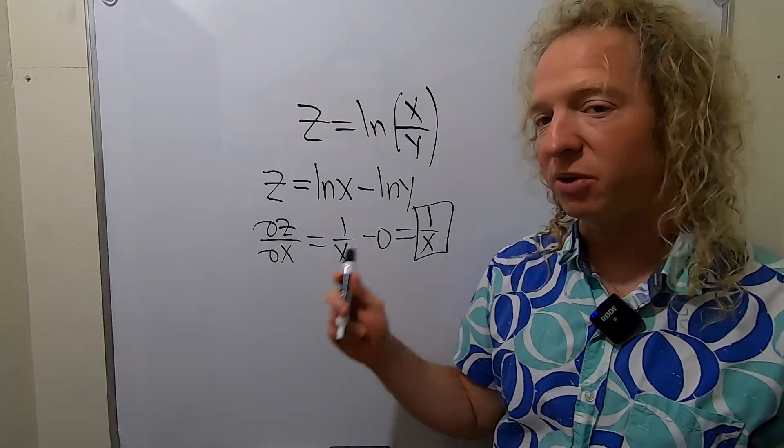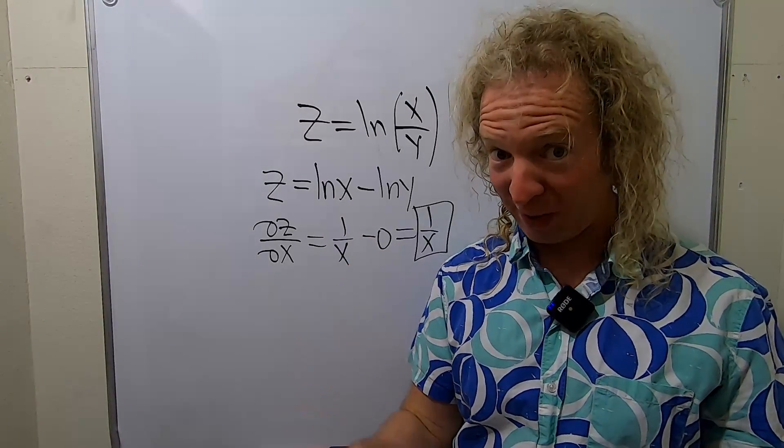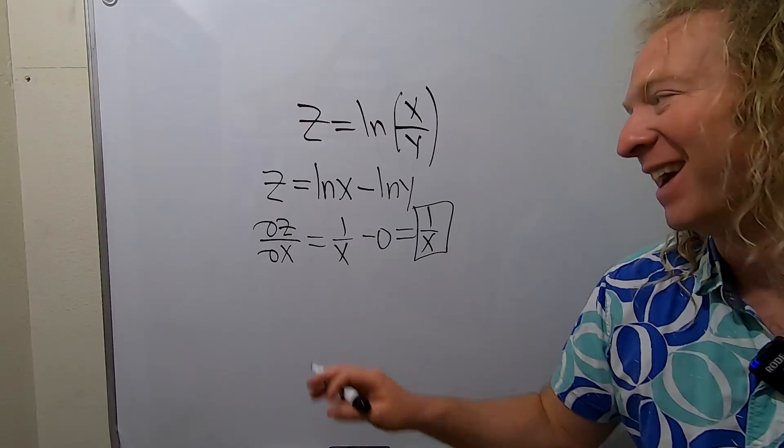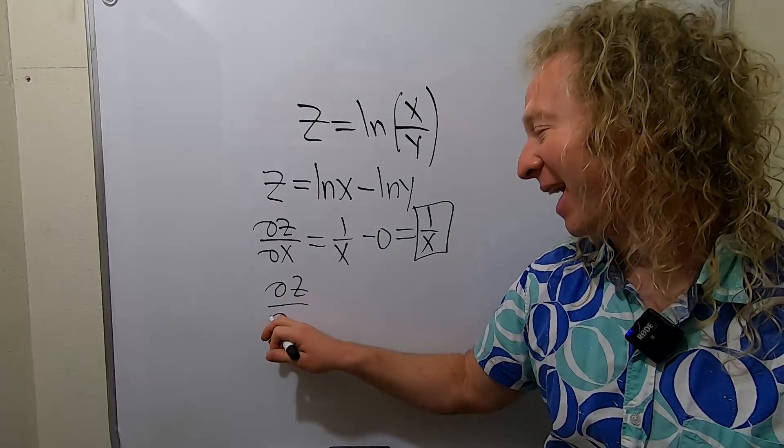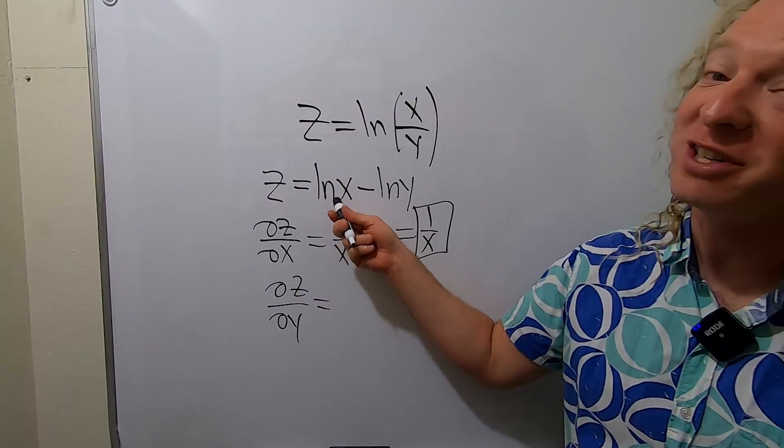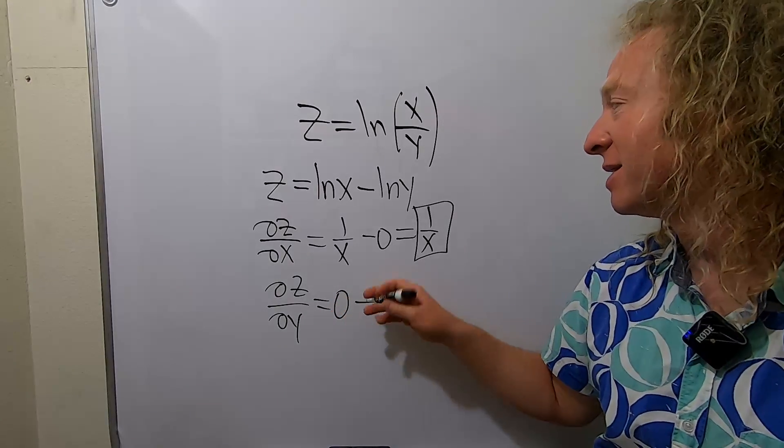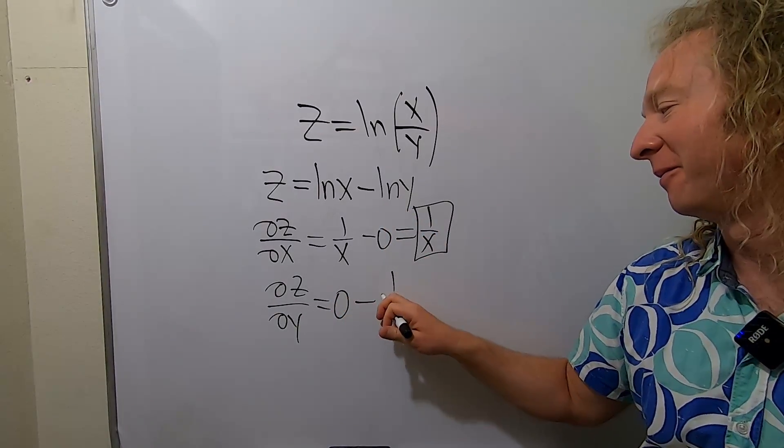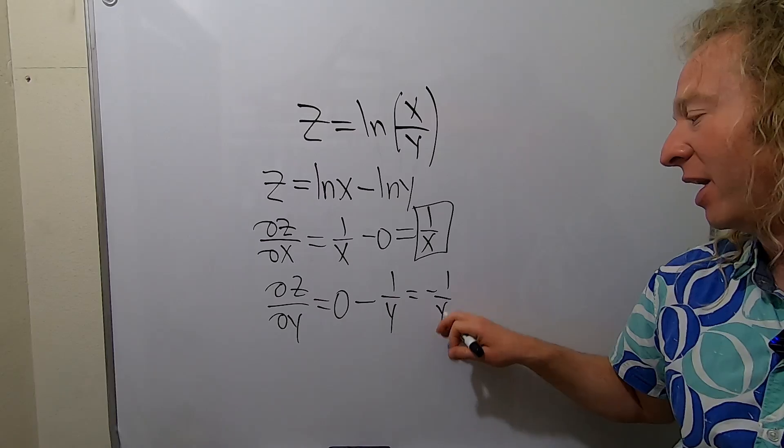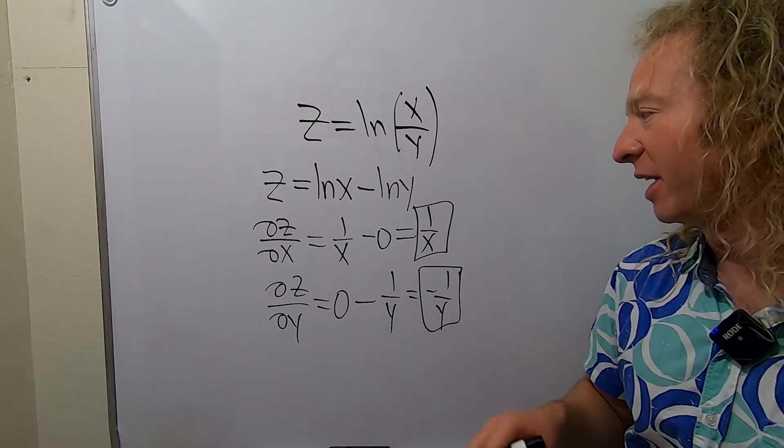Now we just have to compute the partial with respect to y. So ∂z/∂y, this derivative is 0 minus, and then here you just get 1 over y, so you get negative 1 over y, and that would be the final answer.